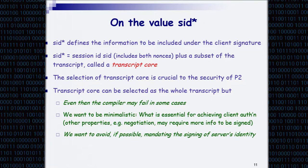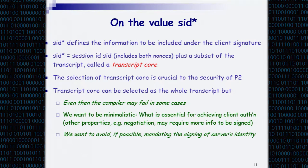The value SID* — the part of the transcript being signed by the client — turns out to be very important and tricky. We will always include the session ID, which also includes nonces from the parties, and a subset of the transcript, which I call the transcript core. How you define the transcript core is crucial for security: for some transcript cores the protocol will be secure; for others it will not.